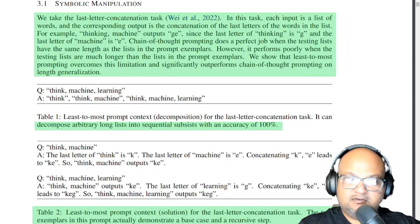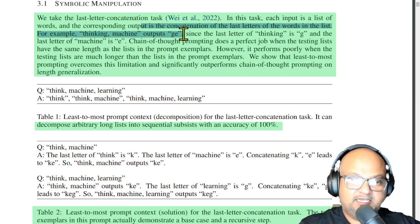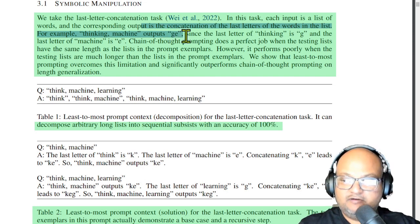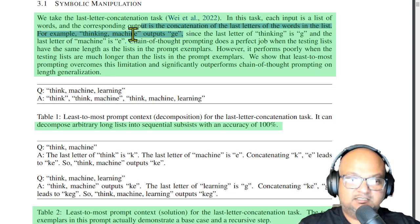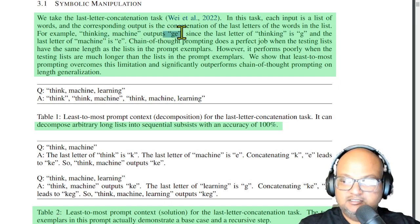Let's look at a real reasoning task that has to do with symbolic manipulation. The task we want to solve is: given a list of words, we want the string which is the concatenation of the last letter of each of the words in the list. So for example, if the two words in your list are 'thinking' and 'machine', since G is the last letter of 'thinking' and E is the last letter of 'machine', the output you want is GE.